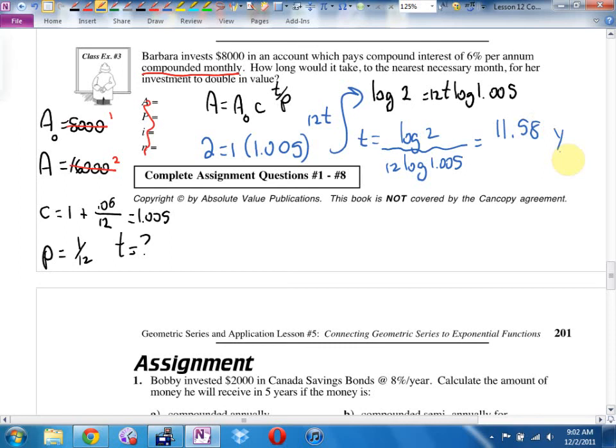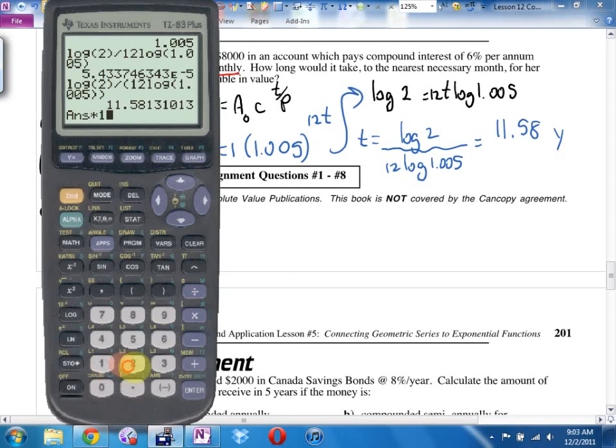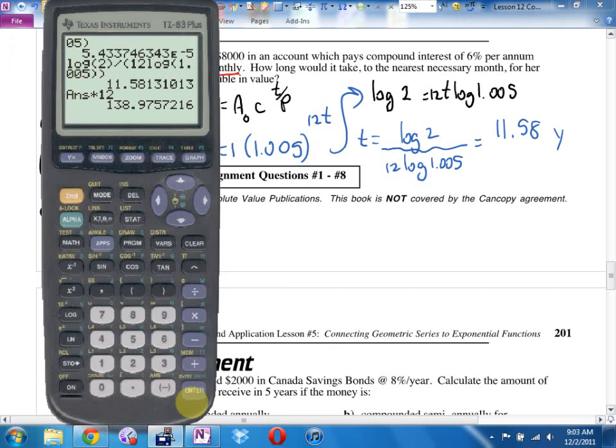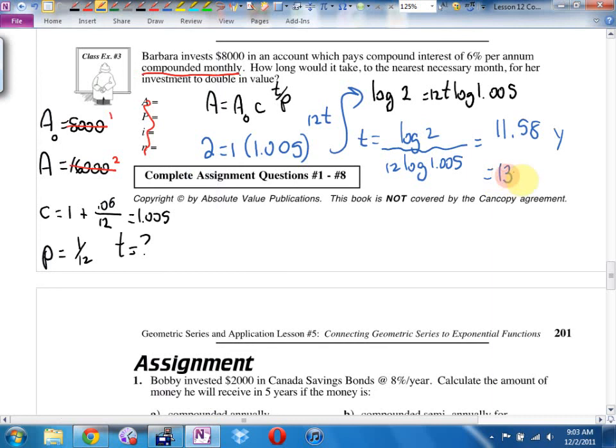11.58 years. This answer doesn't want an answer in years. What does this answer want its answer in? Months. How do I go from years to months? Times by 12. And since I have this number here, times 12. It says to the nearest necessary month, 139 months.